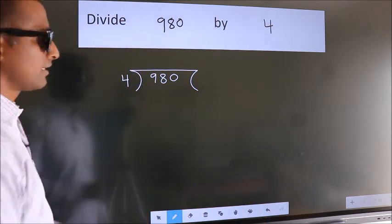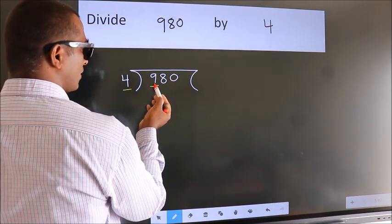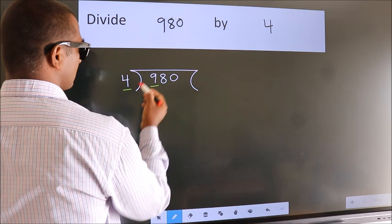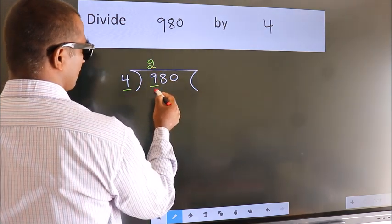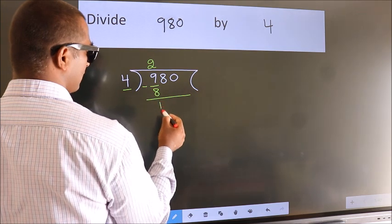Next. Here we have 9. Here 4. A number close to 9 in 4 table is 4 twos 8. Now we should subtract. We get 1.